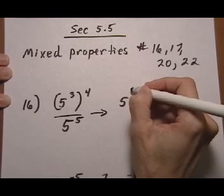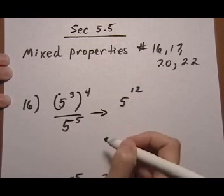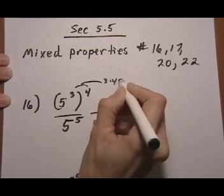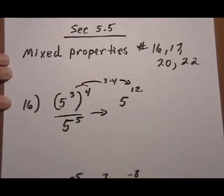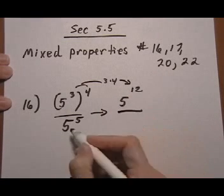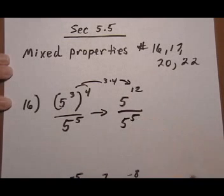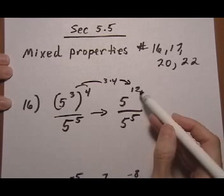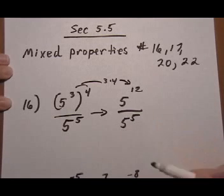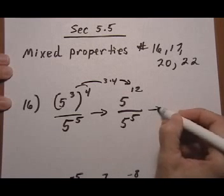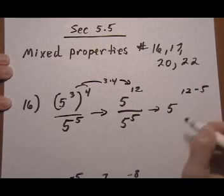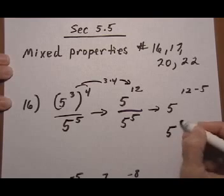And that gives us 5 to the 12. So right there we're going to do the 3 times 4. And that's one of the power rules. Just carry along this guy. Now we're okay to use the quotient rule because we have a base to a power, the exact same base to a power. So that means we can keep the base, subtract the exponents. So we end up with 5 to the 7th.